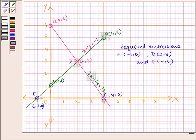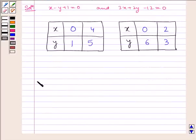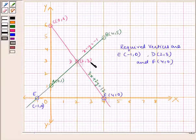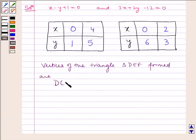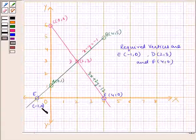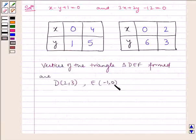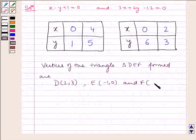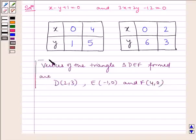Vertices of the triangle D, E, F formed are: We have D as (2,3), so we write D (2,3), E as (-1,0), and F as (4,0). Therefore this is our required answer.